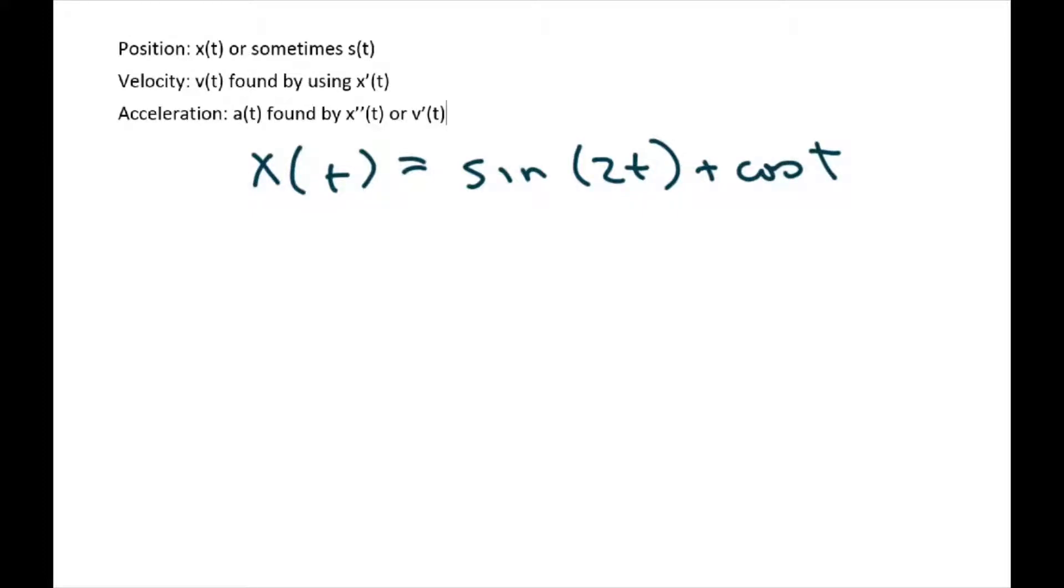All right, now to find velocity, we just take the derivative of this. So velocity of t equals, and you're just going to take the 2 in front here, this 2, and the derivative of sine is cosine of 2t. And then the derivative of cosine is negative sine. So that would be negative sine of t.